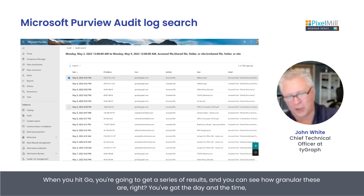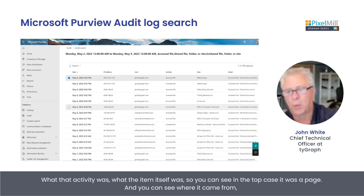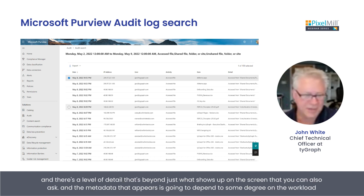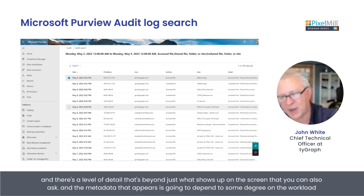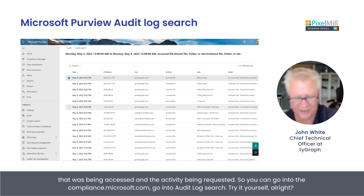When you hit go, you're going to get a series of results. And you can see how granular these are — you've got the day and the time, the IP address of where people were calling in from, what that activity was, what the item itself was. You can see in the top case it was a page, and you can see where it came from. There's a level of detail beyond just what shows up on this screen that you can also query. The metadata that appears is going to depend on the workload that was being accessed and the activity being requested.